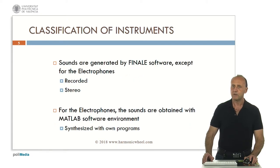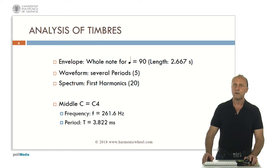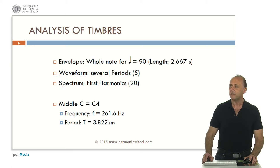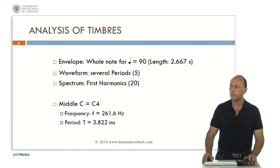Except for the electrophones, the sounds are generated by Finale software, so they are recorded stereo sounds. For the electrophones, the sounds are obtained with MATLAB, so they will be synthesized with our own programs. For each instrument, we will consider a whole note for a tempo of quarter note equal to 90, so the whole note will have a length of 2.667 seconds. We will represent 5 periods of waveform and the first harmonics — more or less 20, in some cases more. As a reference, the middle C in the piano corresponds to C4, whose frequency is 260 Hz and the period 3.8 ms.